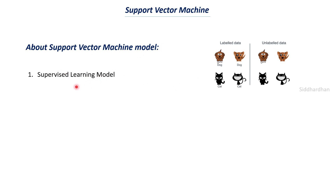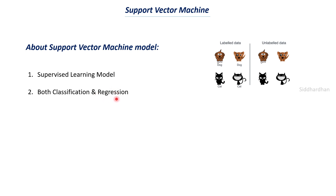Support vector machine is a supervised learning model, and in supervised learning there are two types: classification and regression. The support vector machine model can be used for both classification and regression purposes, but it is predominantly used for classification. We will be discussing the support vector machine classifier and not the regressor. If time permits, we may discuss regression in later videos, but for now let us focus on the classification model built using support vector machine.